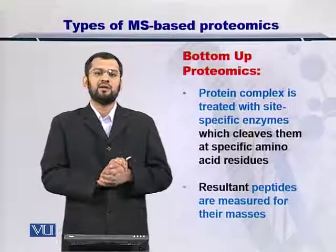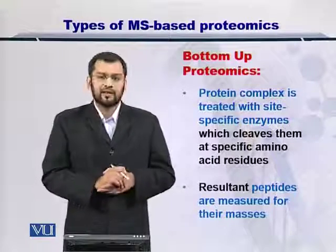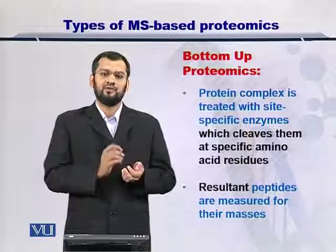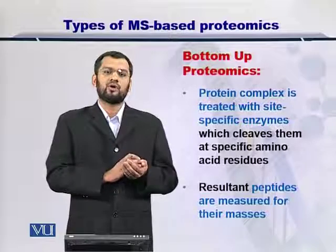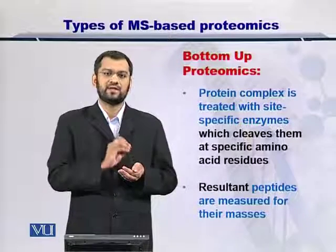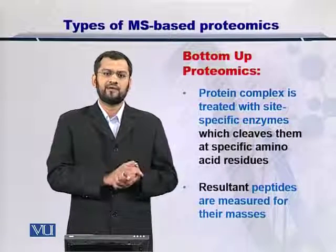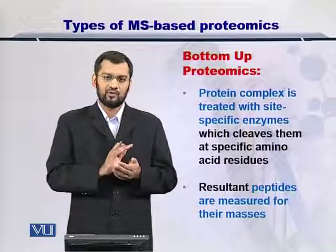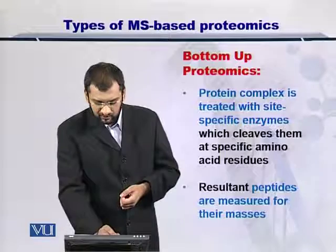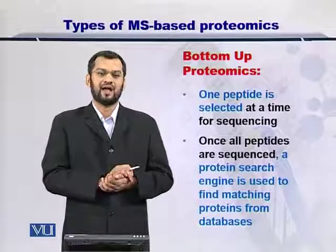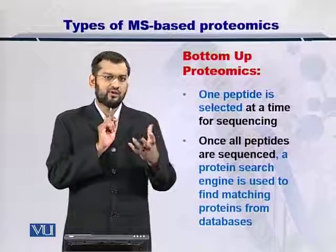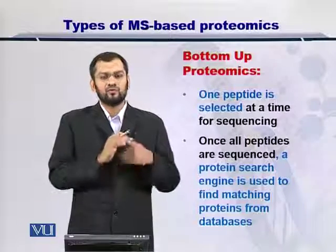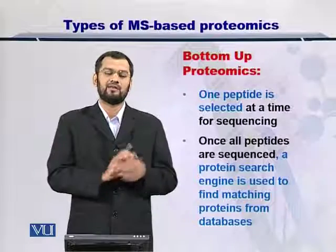Let's talk in more detail about bottom-up proteomics. The protein complex is first treated with a site-specific enzyme. If you have multiple proteins within a sample and you treat it with an enzyme, the enzyme is going to cut all the proteins at the site on which it binds. This will result in lots of peptides from different proteins, all having been cut at the same residue. Next, these peptides are measured for their mass, and for that you have to select one peptide at a time. Once you select one peptide, you can detect its deflection and record the mass. Of course, you can repeat this process to measure the mass of all the peptides in the sample.